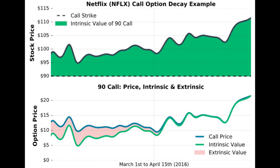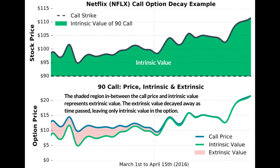In this next example we're looking at a call option on Netflix with a strike price of $90. Netflix was above the call strike price the entire time, so the call always had intrinsic value. Only an option's extrinsic or time value melts away as time passes. On the bottom of the chart we can see the option's total price relative to its intrinsic value — the shaded region between them represents extrinsic value. Over time, as the option approached expiration, that gap converged, bringing the total option price and intrinsic value closer together.